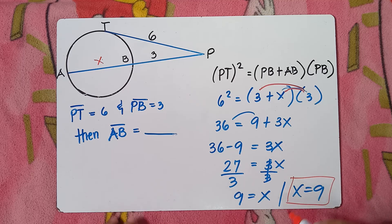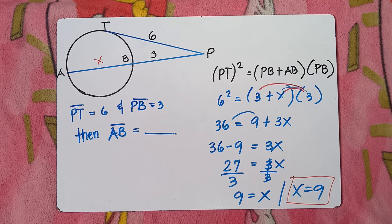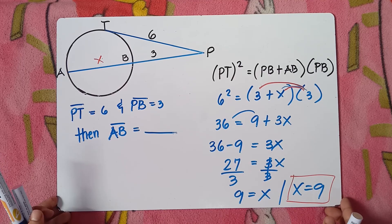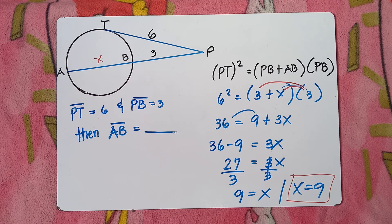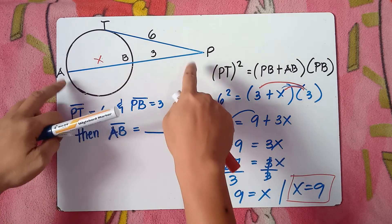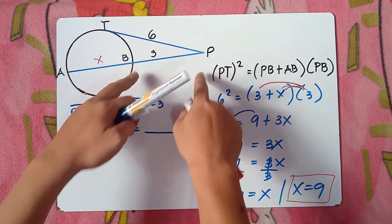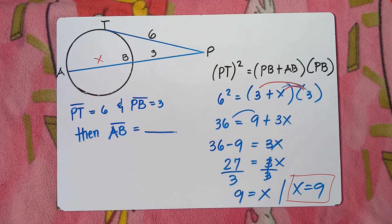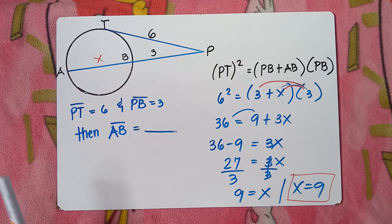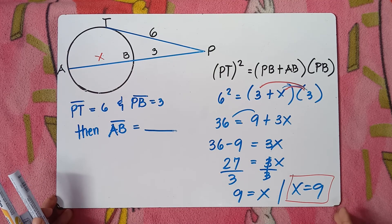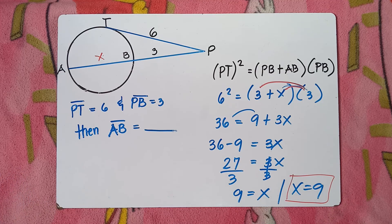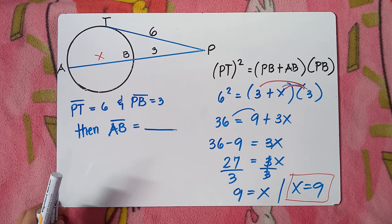That's how you solve the tangent-secant segment theorem. Remember: the square of the tangent equals the product of the secant and its external segment. I hope this video helps. Please subscribe and share it with your classmates and friends. Our next topic will be the secant-secant segment theorem. Have a great day, goodbye for now.